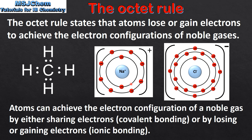In ionic bonding, atoms can lose or gain electrons to achieve the electron configuration of a noble gas. Here we have two ions: on the left we have a sodium ion, on the right we have a chloride ion. When a sodium atom loses one electron, it becomes a one positive ion. When a chlorine atom gains an electron, it becomes a one negative ion. By losing or gaining electrons, both ions have achieved the electron configuration of a noble gas.